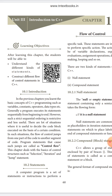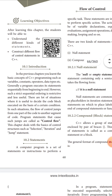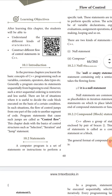This chapter deals with the basics of control structure. We will be discussing three types of statements: selection, iteration, and jump statements.